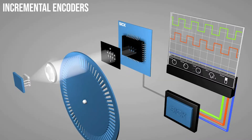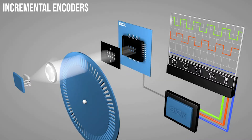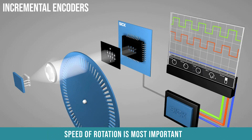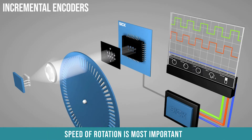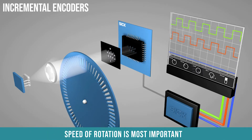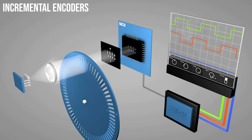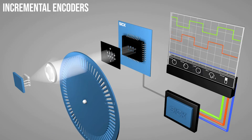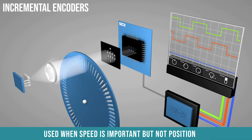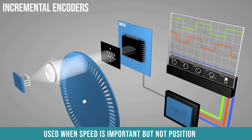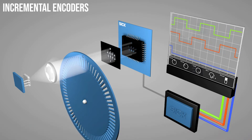Now let's dive into the difference between the two. Incremental encoders are a common type of basic encoder. They're mostly used in applications where the speed of rotation is the most important information you're trying to gather. For example, they are commonly used in pumps, fans, conveyors, and other applications where it's important to know speed but not position.